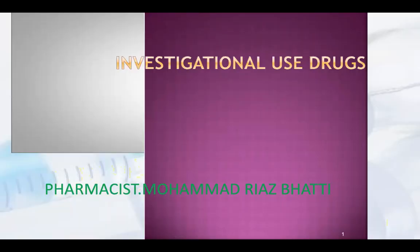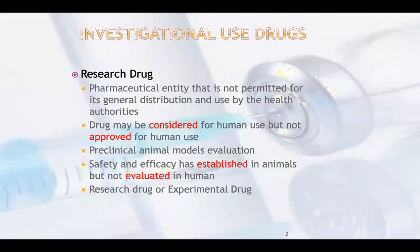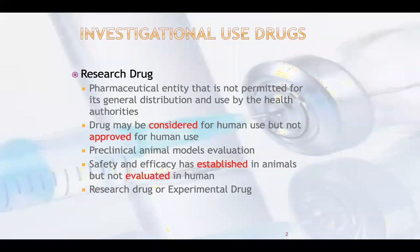What are these investigational drugs? Mostly investigational drugs are research drugs. To make sure, sometimes when you are going to research — at phase four — these drugs have to be applied on human subjects. These drugs have to be applied on human subjects. For this, you need the investigational use of drugs. You can say that it's a pharmaceutical entity that is not permitted for its general distribution and use by the health authorities. So a drug may be considered for human use, but not yet approved for human use. That drug, which is still not fit for human consumption, must go through prior investigations.